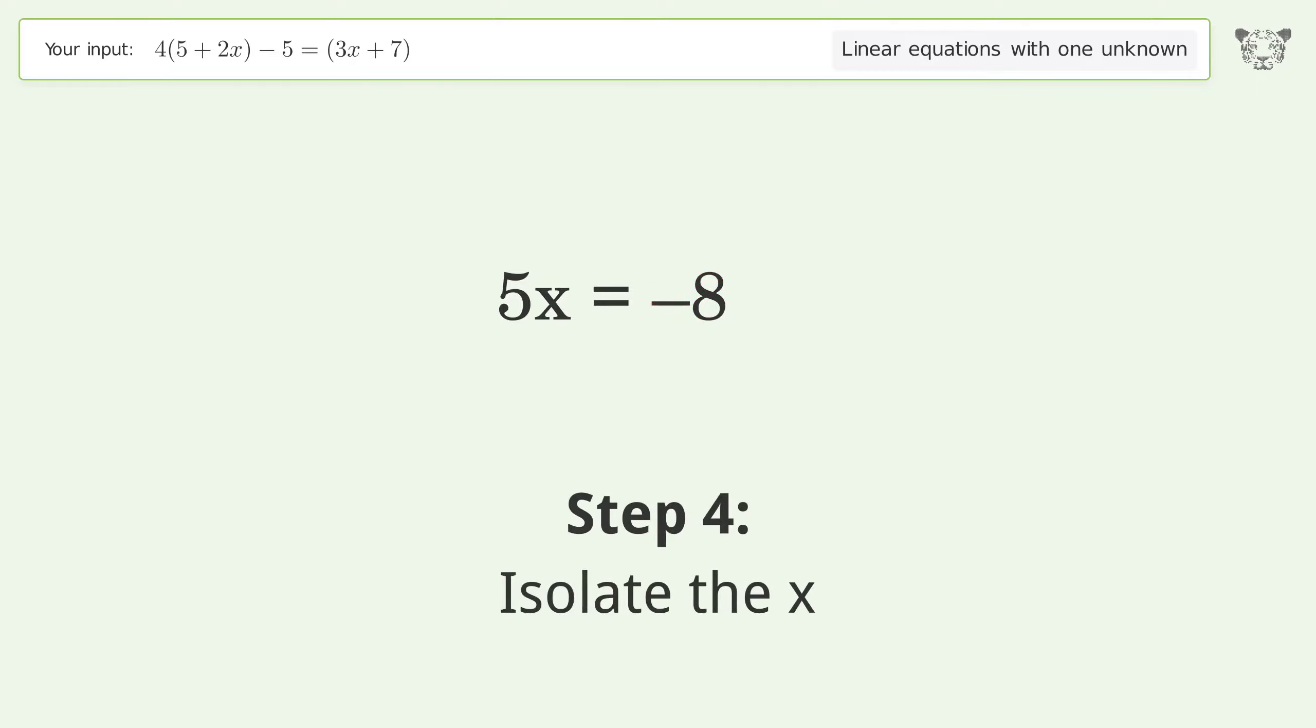Group like terms. Isolate the x. Divide both sides by 5. Simplify the fraction.